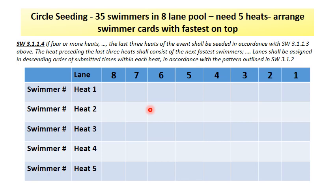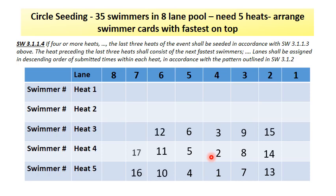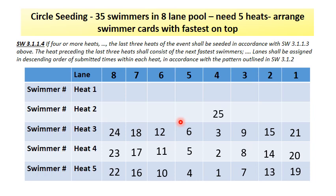The heat preceding the last three heats shall consist of the next fastest swimmers. Lanes shall be assigned in ascending order of submitted times within each heat in accordance with SW 3.1.2. So the last three heats — heats three, four, and five — are seeded like the previous example beginning with heat five lane four. Once the three heats are full, the remaining swimmers are seeded according to SW 3.1.2. The next eight swimmers are seated in heat two beginning in lane four, then lane five, then lane three, continuing until all swimmers are seated.